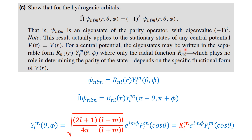For a central force, the eigenstate may be written in separable form as R_nl, which is a function of R alone (the radial part of the wave function), multiplied by Y_l^m, which is a function of theta and phi (the angular part of the wave function), where only the radial function R_nl plays no role in determining the parity of the state.